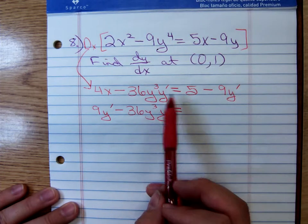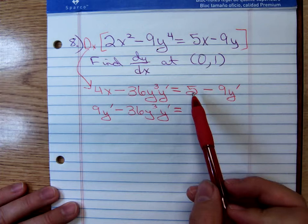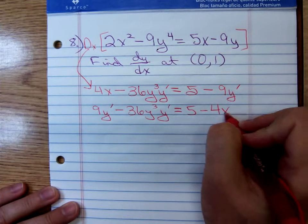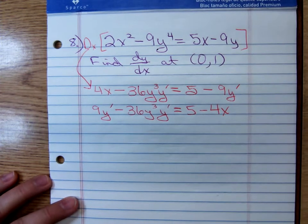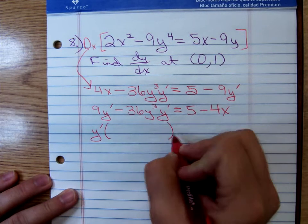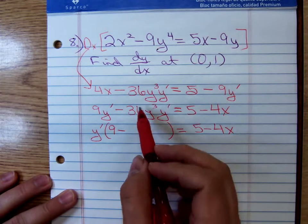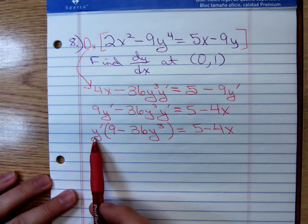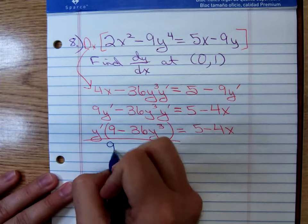So, now everything that doesn't have a y prime, we have all the y prime terms on one side. Now let's move, excuse me, let's move the terms that don't have a y prime to the other side. So, move that 4x over, that'll become a minus 4x. And why did we get all the y prime terms on the same side? Why did we get all the y prime terms? We can now factor out a y prime. That'll leave me a 9 minus, we'd have a 36y cubed. And then to solve for y prime, to undo that multiplication, we'll divide both sides by 9 minus 36y cubed.